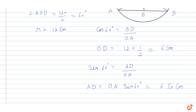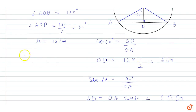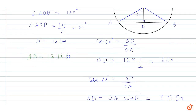Therefore AB is equal to 2 times AD, which is equal to 12√3 cm.